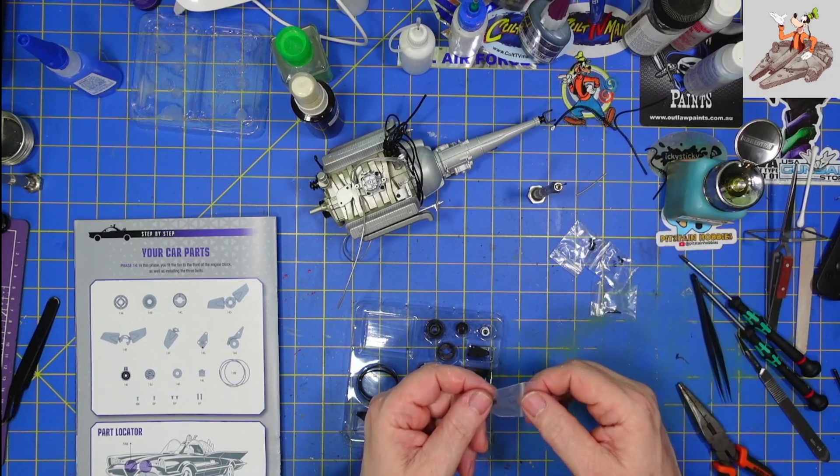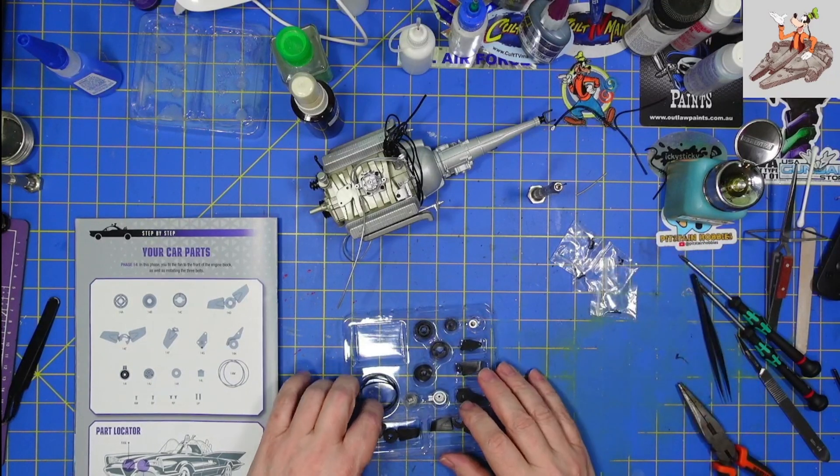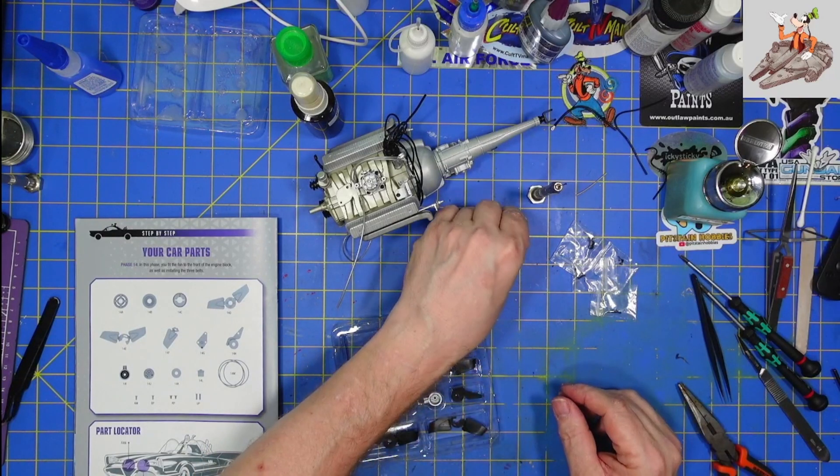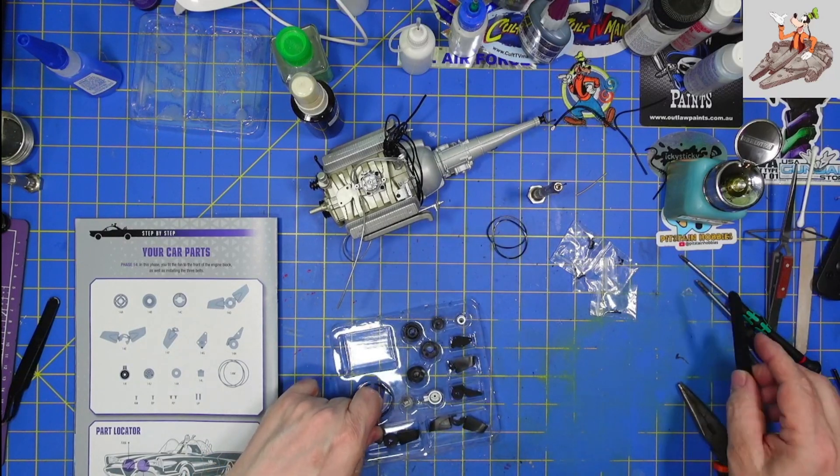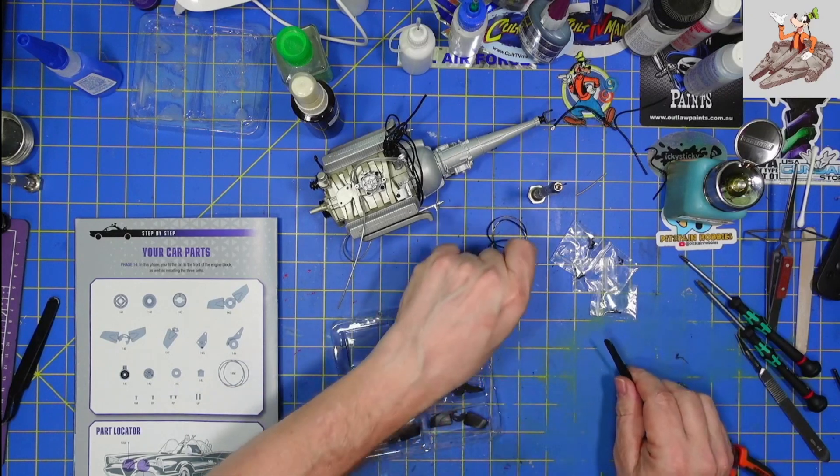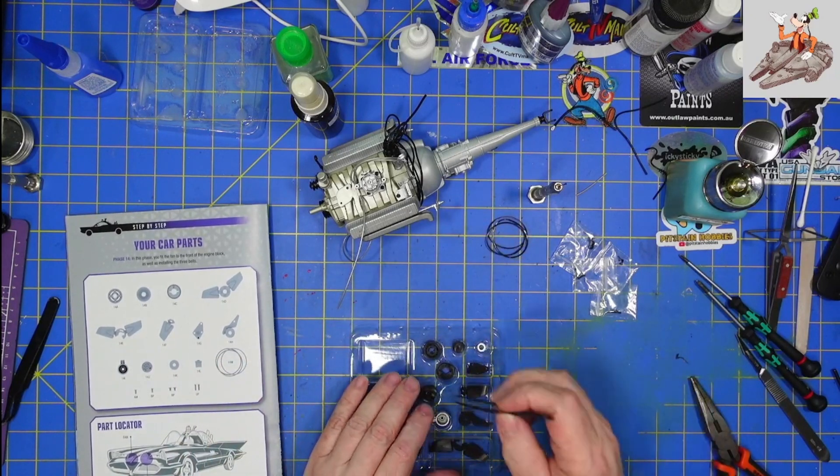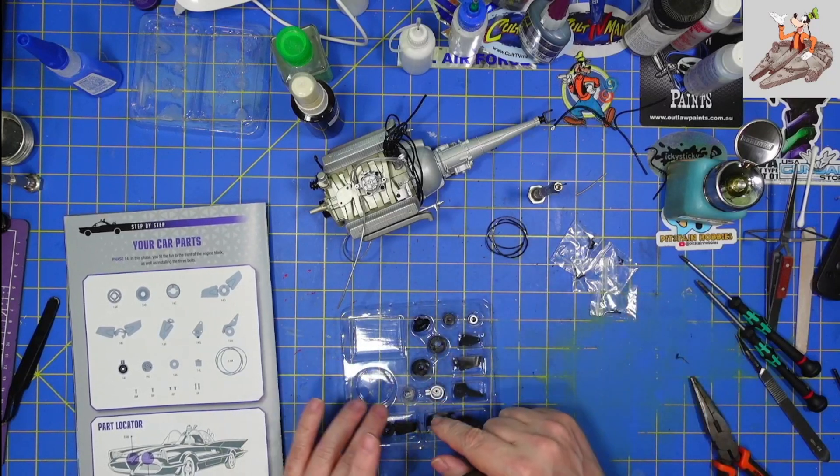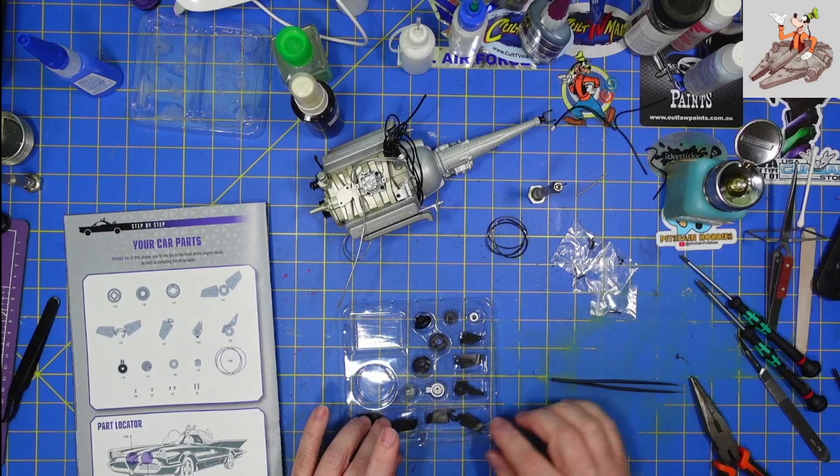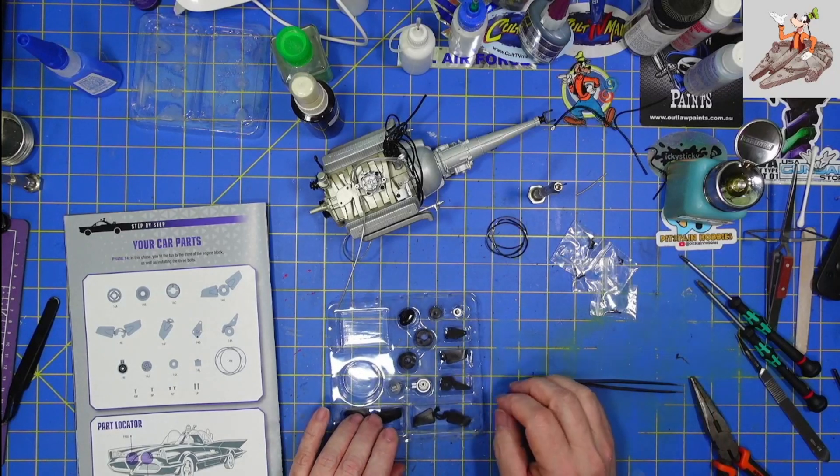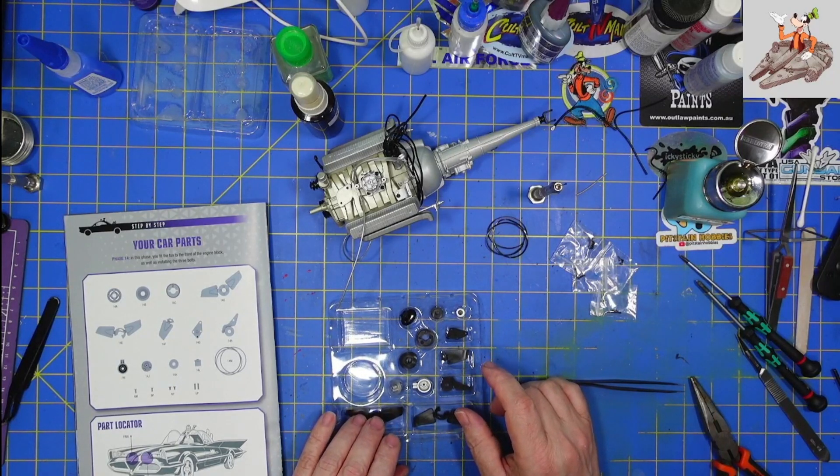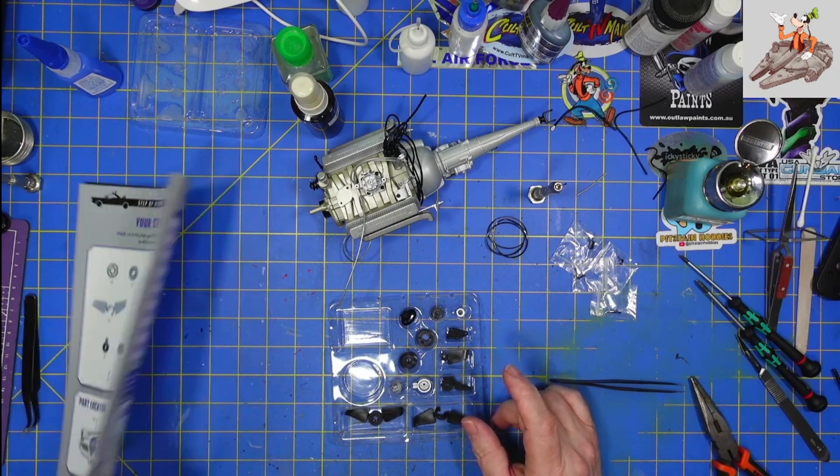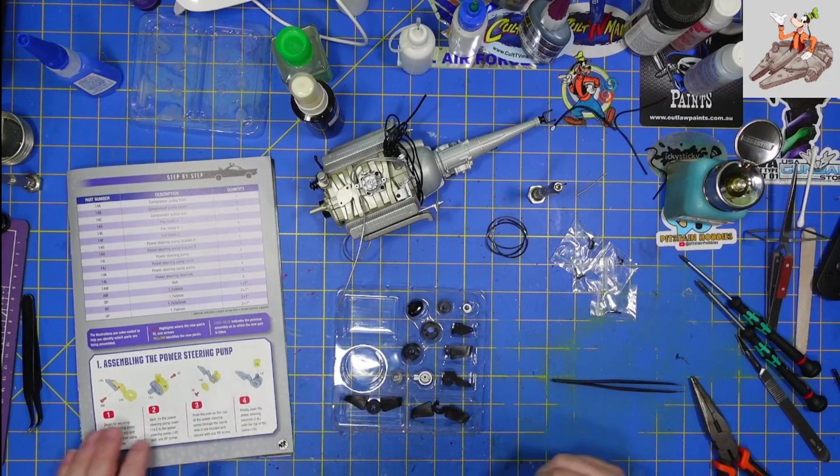So we've got AM and UP screws. There are three belts. I'm going to leave them all in here. We have a bunch of pulleys, a bunch of silver parts. The fan is actually in, well, it looks like three parts, maybe more. But let's go ahead and get building.